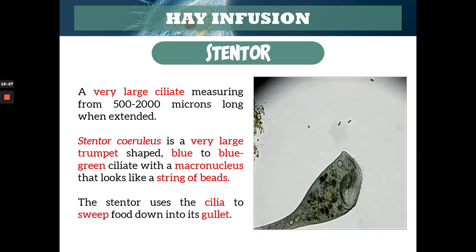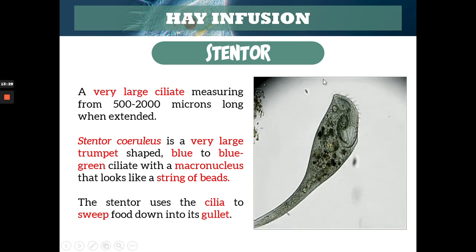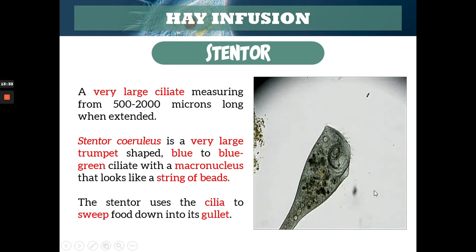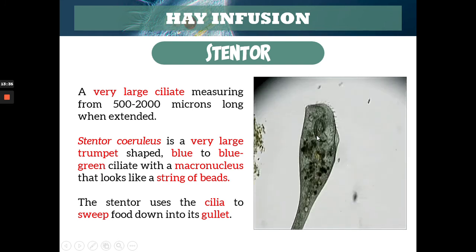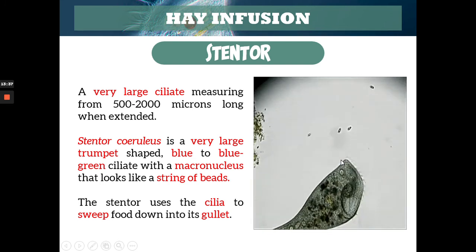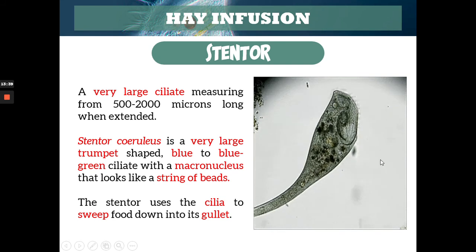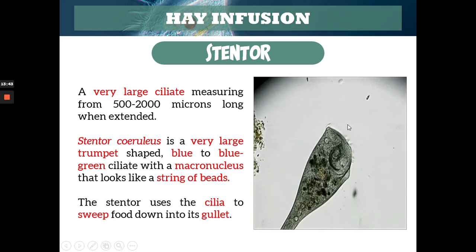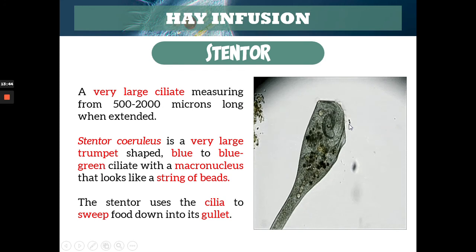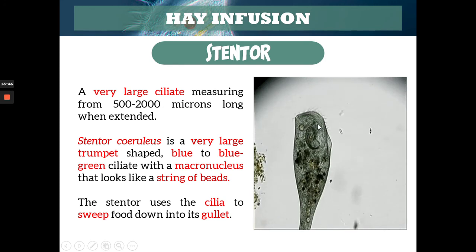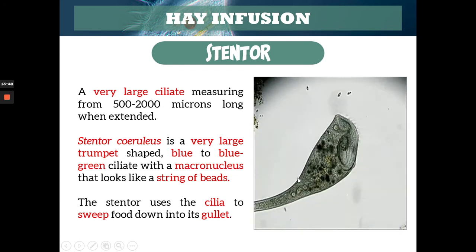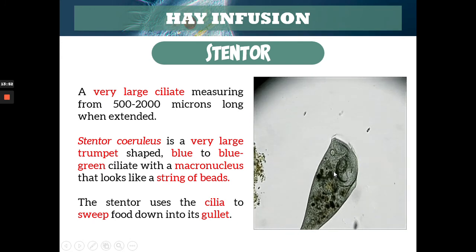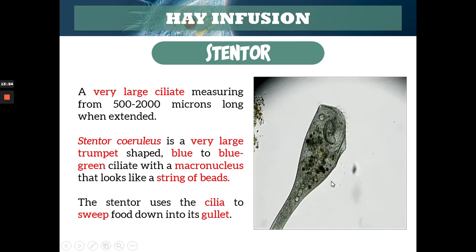Here's an example of a stentor. As you can see, yes, it looks like a trumpet. The one at the top — you can see the cilia moving. And this is its gullet, like an esophagus for food. The cilia here are used by stentor to get food and bring it into its body down its gullet. That's stentor — it looks like a trumpet, a very large ciliate.